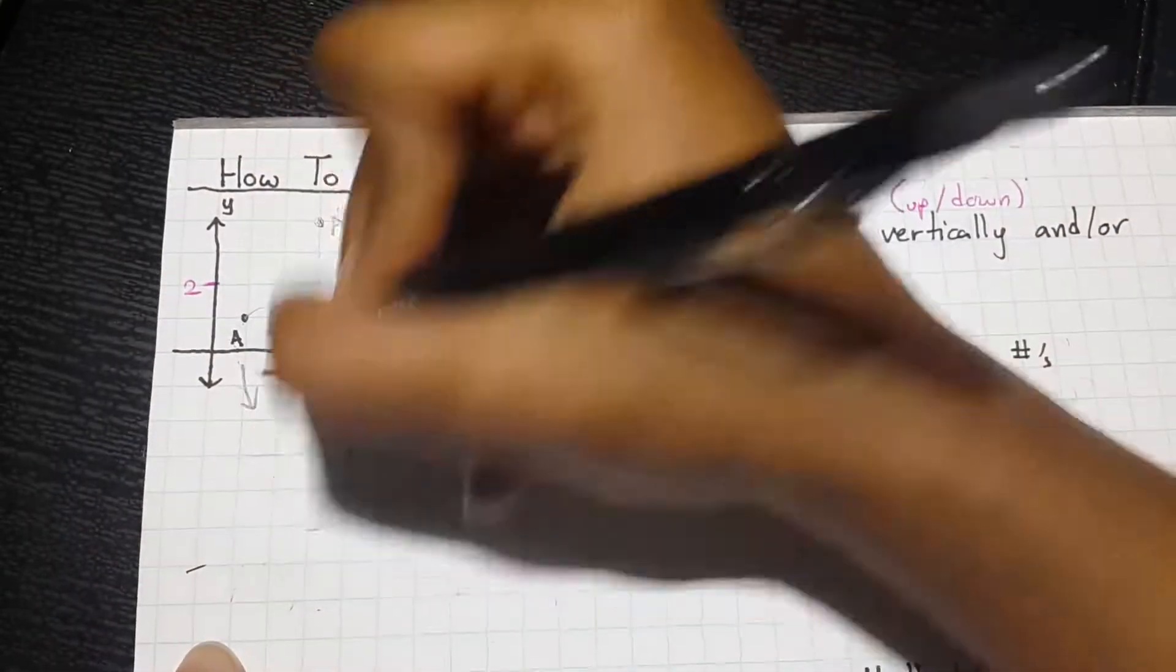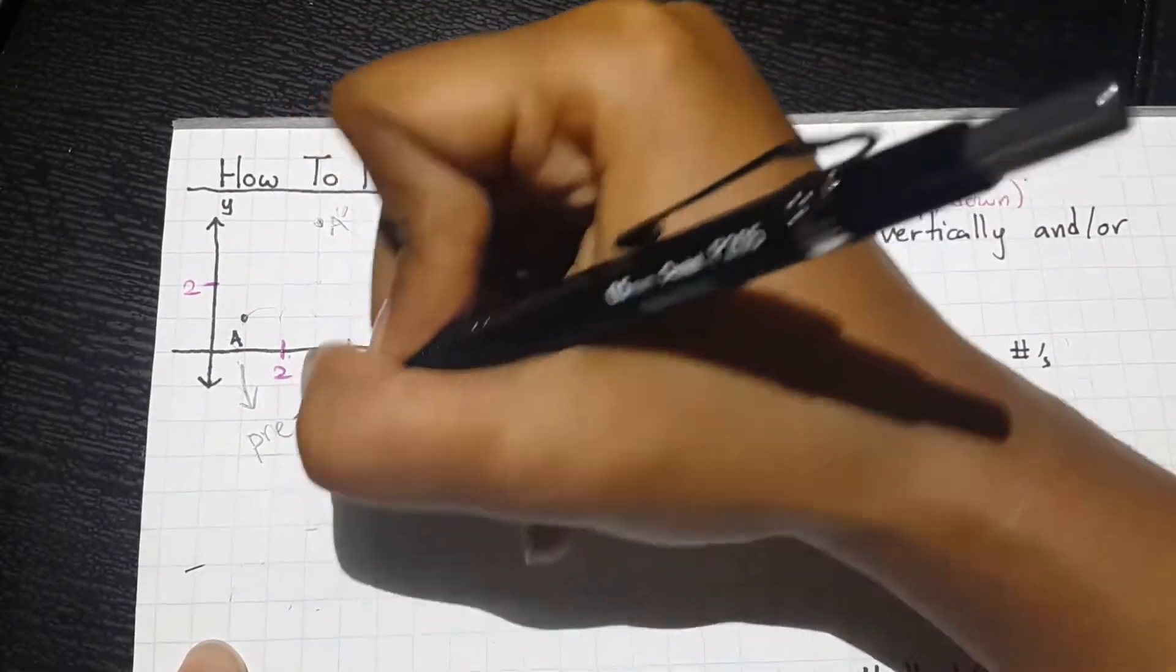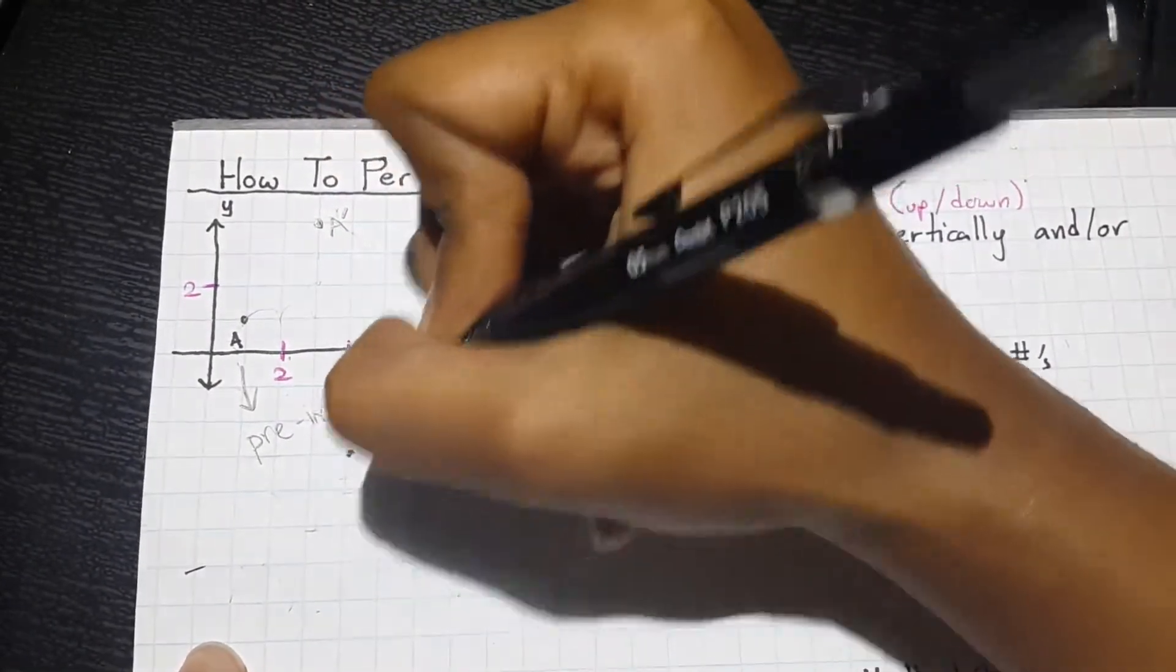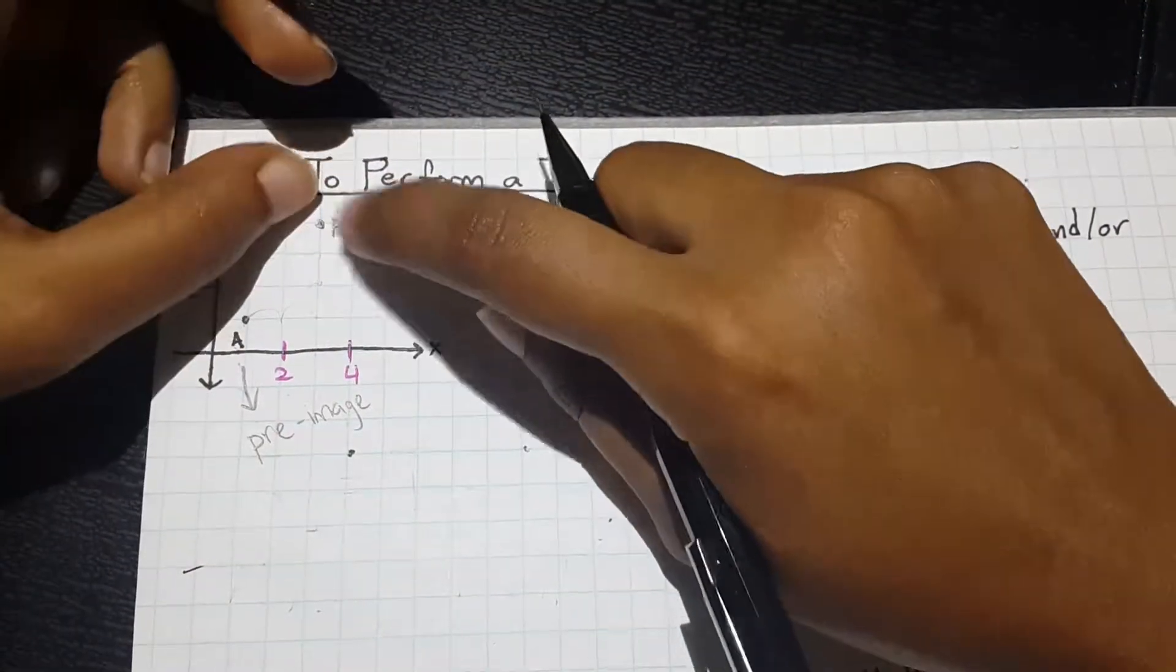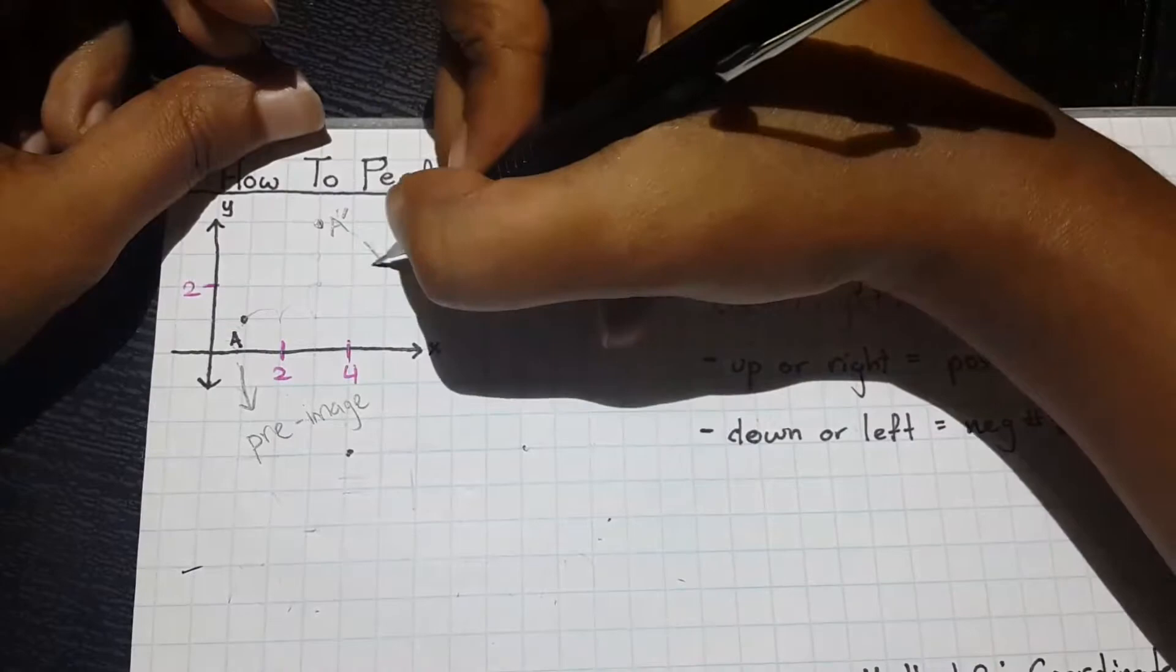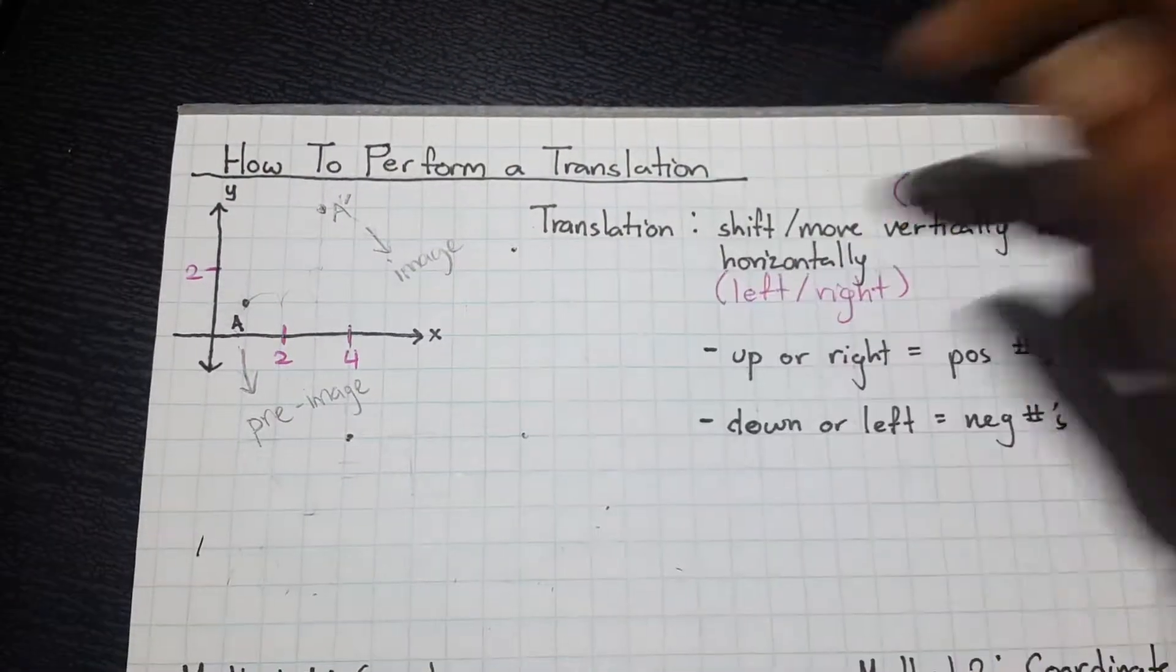So, our special terminology for this, since this is our original point, we would call this the pre-image. This is our original, and since this was the result of a translation, we would call this one our image. These are definitely terminologies you need to know.